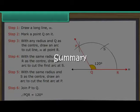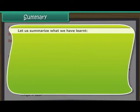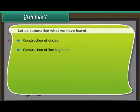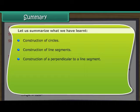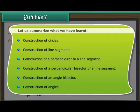Summary. Let us summarise what we have learnt: construction of circles, construction of line segments, construction of a perpendicular to a line segment, construction of a perpendicular bisector of a line segment, construction of an angle bisector, and construction of angles.